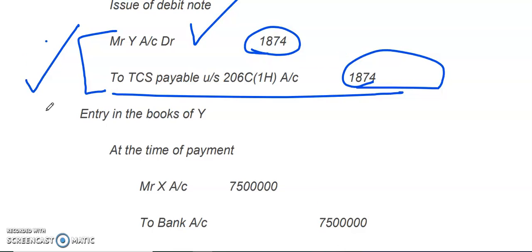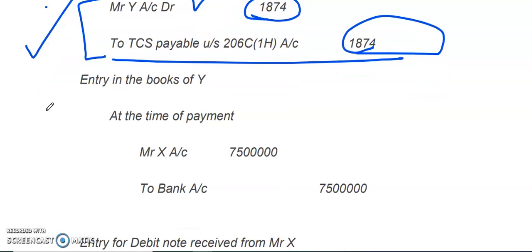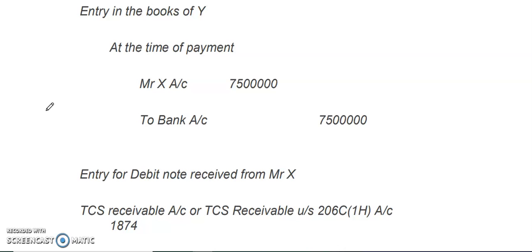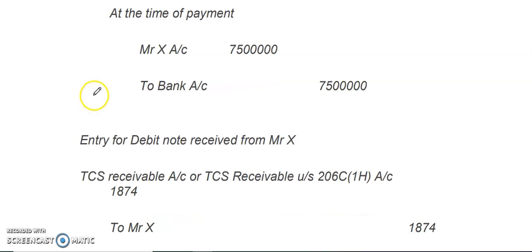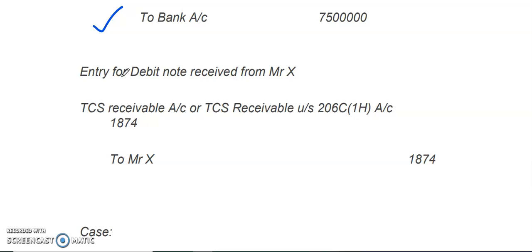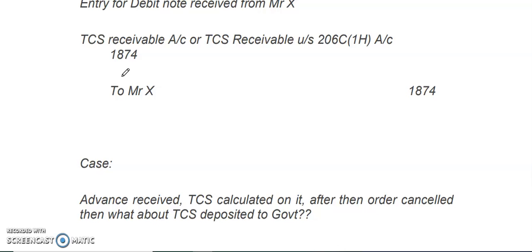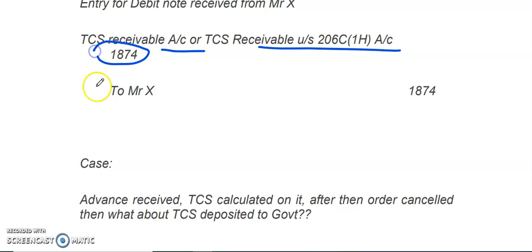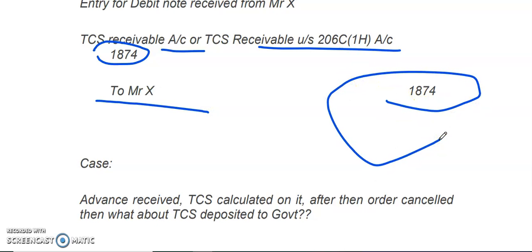In the books of Y, at the time of making the payment, the entry will be Mr. X Account Debit 75 lakh to Bank Account 75 lakh. When the debit note is received from Mr. X, the entry will be: TCS Receivable under Section 206C-1H Account Debit with 1,874 to Mr. X Account — 1,874.